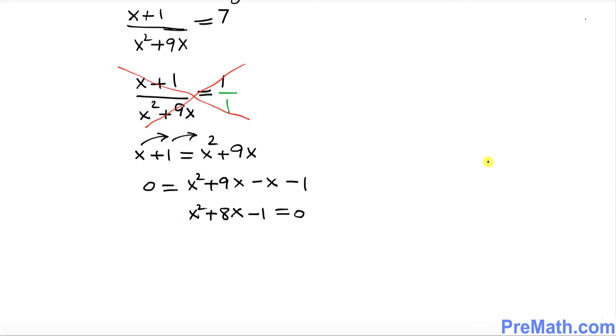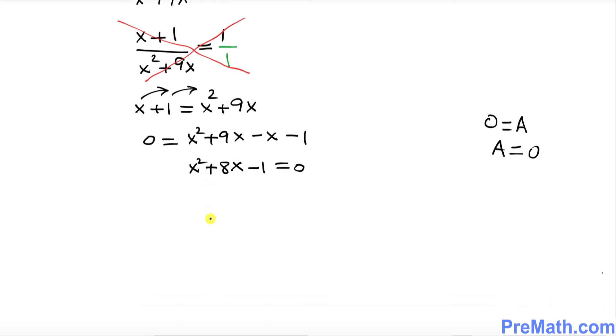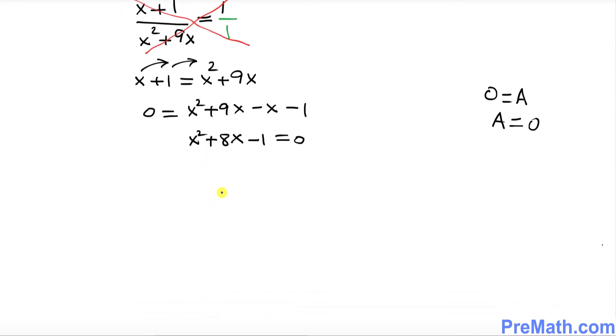Does it make any difference if I put a zero on this side? None whatsoever. Use this fact: if zero equals to a, then there's no difference if you put a equal to zero.